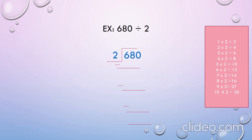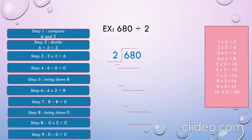Let's move on to the next example: 680 divided by 2. The first step while dividing is to compare. Here we are comparing 6 with 2. As 6 is greater than 2, we can divide 6 by 2. By using the tables of 2, we will get the product 6 by multiplying 3 with 2. Now let's write 3 in the hundreds place of the quotient and 6 under 6. Let's subtract 6 from 6. That is 6 minus 6 equals 0.